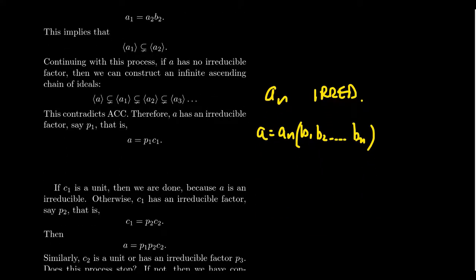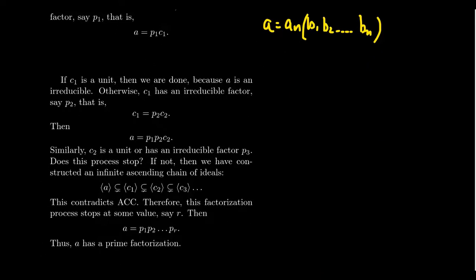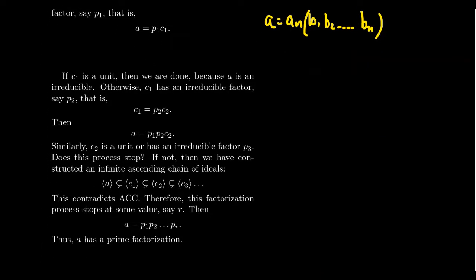An important comment: we didn't really use the fact that D is a principal ideal domain — we just used that it's a Noetherian domain. So a Noetherian domain implies every non-zero, non-unit element has an irreducible factor, because of the ascending chain condition which a PID satisfies. But more broadly, a Noetherian domain has the property that every non-zero, non-unit element has an irreducible factor.